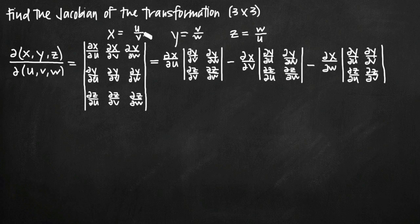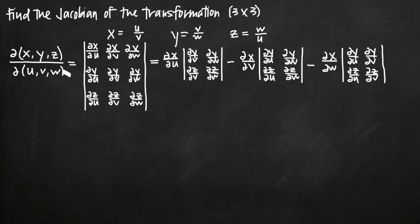In order to do so, all we need to do is take the partial derivative of the equations defined by x, y, and z in terms of u, v, and w. So we have three variables defined by three other variables. Notice that x is defined in terms of u and v, y in terms of v and w, and z in terms of w and u. That's why I've written three by three up here — because we have three variables in terms of three others.